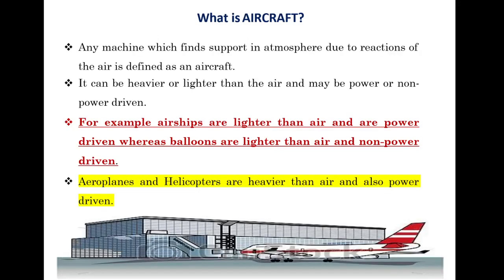In today's lecture, we will move towards the next points in airport engineering: what is aircraft, what are the components of the aircraft, and the characteristics of the aircraft. An aircraft is a machine which finds support in the atmosphere due to the reactions of the air. It can be heavier or lighter than the air, and may be power-driven or non-power driven. Examples of aircraft include airships and balloons — airships are lighter than air and power-driven.